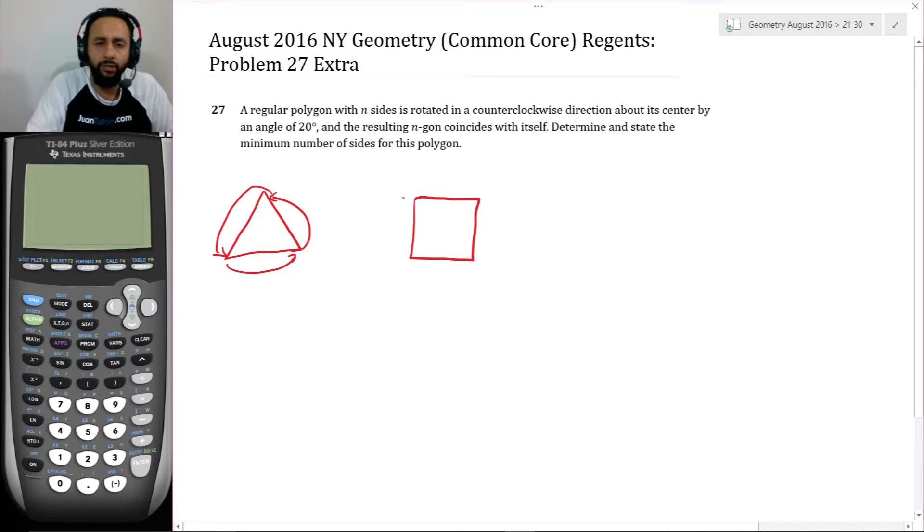A square, also known as a regular quadrilateral can be rotated four times to get back to itself. So counterclockwise, so that the minimum rotation for this one is 90 degrees. Now, if you notice that 360 divided by four is 90.